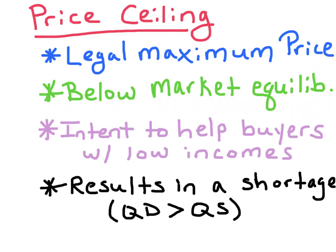The goal is to help buyers with low incomes. Now this might sound like a good idea; however, it results in a misallocation of resources where the market ends up with a shortage. That is, the quantity demanded exceeds the quantity supplied.